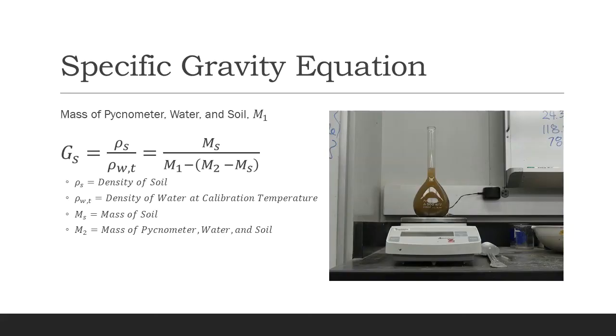After all the bubbles have been removed, fill the rest of the pycnometer with distilled water up to the calibration line and weigh it. Use the equation shown to calculate the specific gravity of the soil.